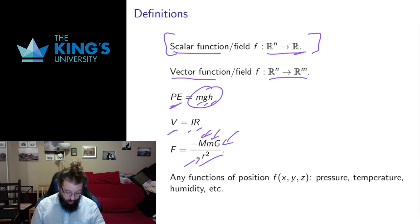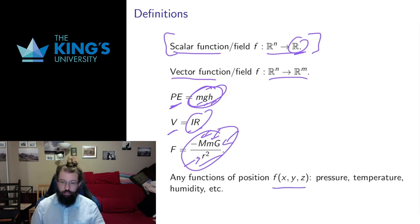So all of these are outputting one thing. You multiply all these together you get one number, multiply all these together you get one number, do this operation get one number. So they all have a single output but they have multiple inputs. And anything that is a scalar that depends on position like the pressure at some point in the air or in the ocean, or the temperature at some point in the air or the ocean or some medium you're looking at, humidity,